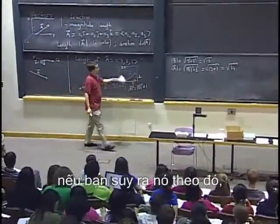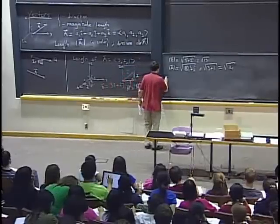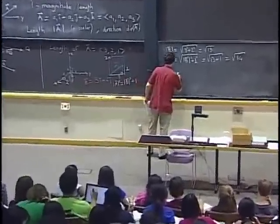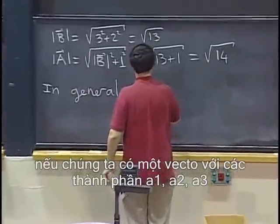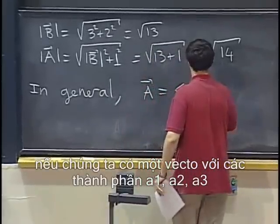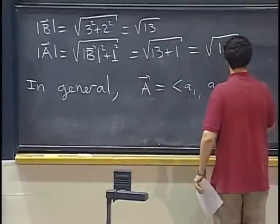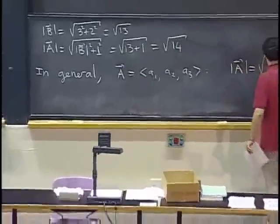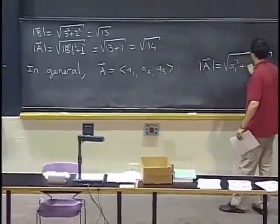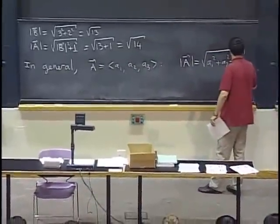OK, so the general formula, if you follow what we did, in general, if we have a vector with components a1, a2, a3, then the length of A is the square root of a1 squared plus a2 squared plus a3 squared.